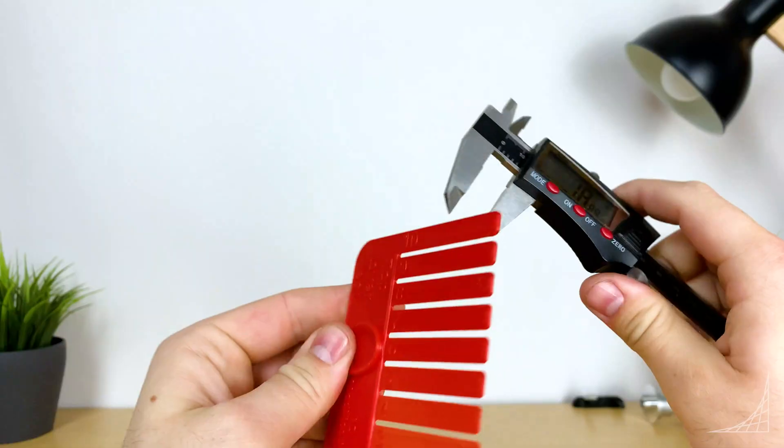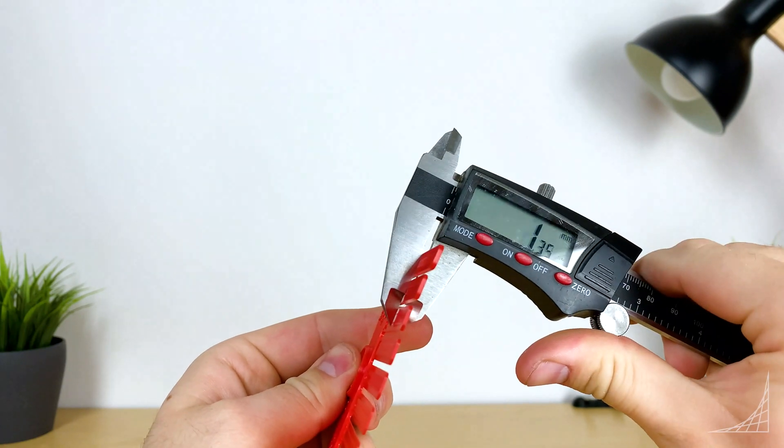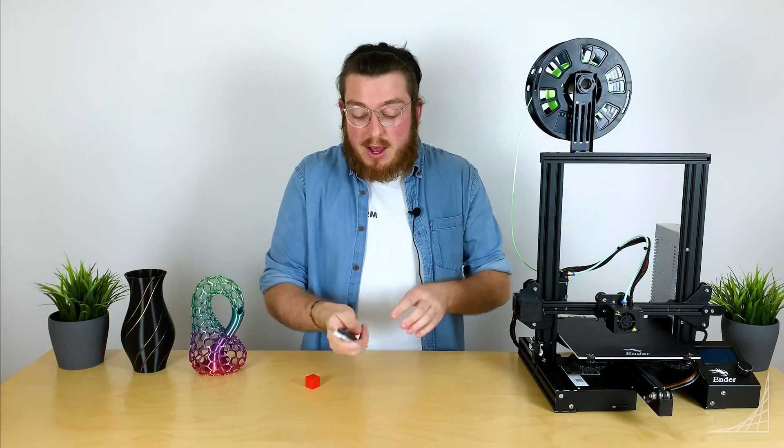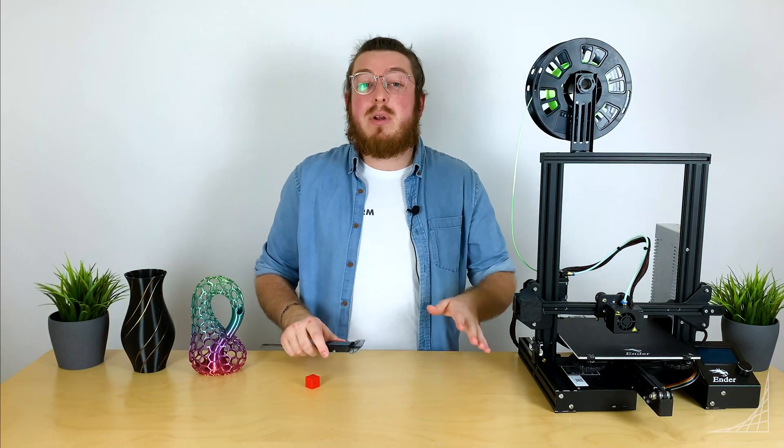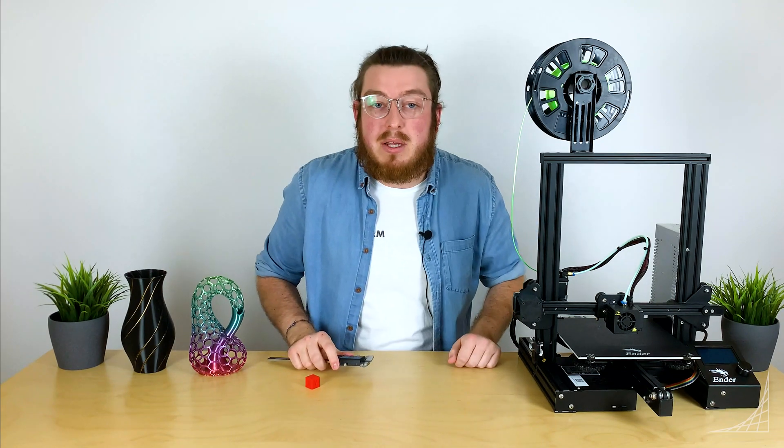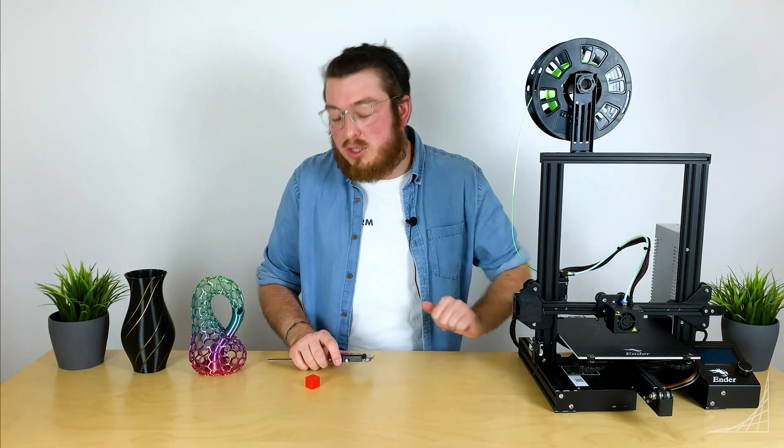Now getting a pair of calipers, we don't need super duper high amount of accuracy for 3D printing. We just want to get to about a tenth of a millimeter. If you can get it in there, you're going to be just fine with that.